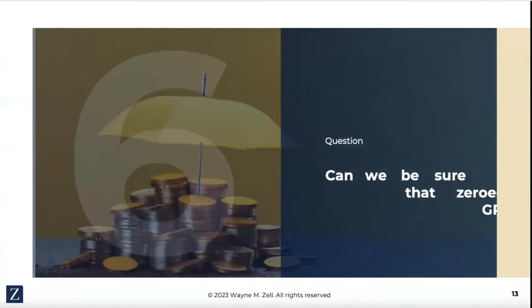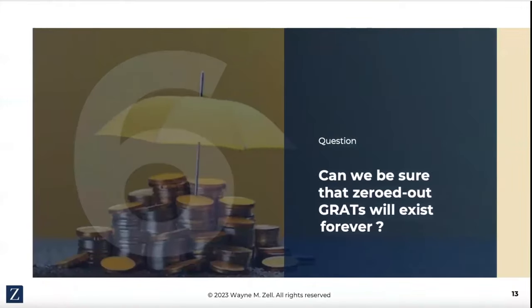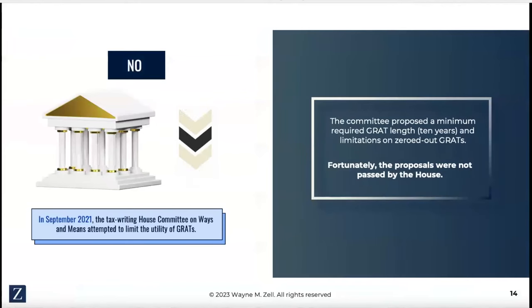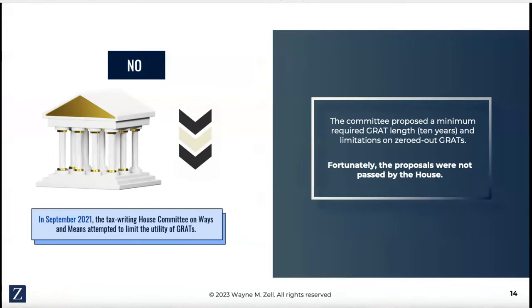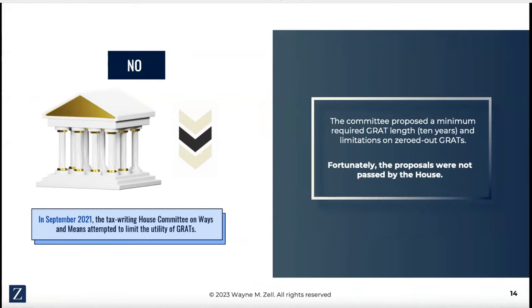Can we be sure that a zeroed-out GRAT or a short-term GRAT will exist forever? Well, no. Legislative attacks have been targeted at GRATs for decades, and in recent years there was an attempt by the House Ways and Means Committee to do away with GRATs and all grantor trusts. In fact, the committee proposed a minimum required GRAT length of at least 10 years and limitations on zeroed-out GRATs and all other grantor trusts. Fortunately, these proposals were not passed by the House of Representatives.